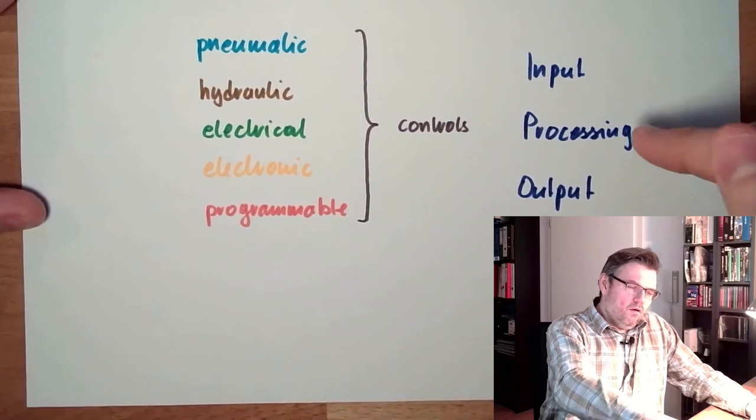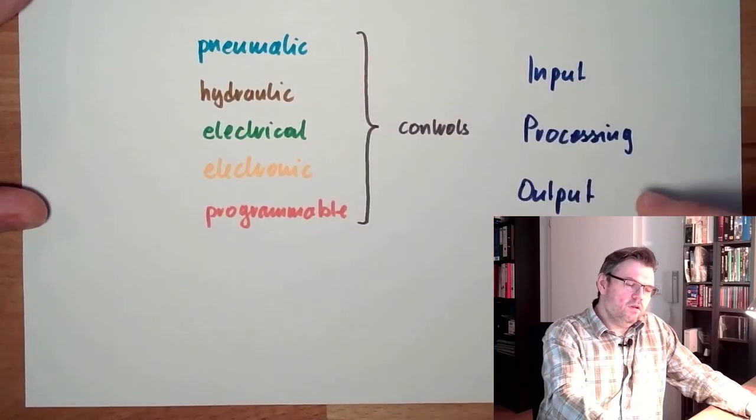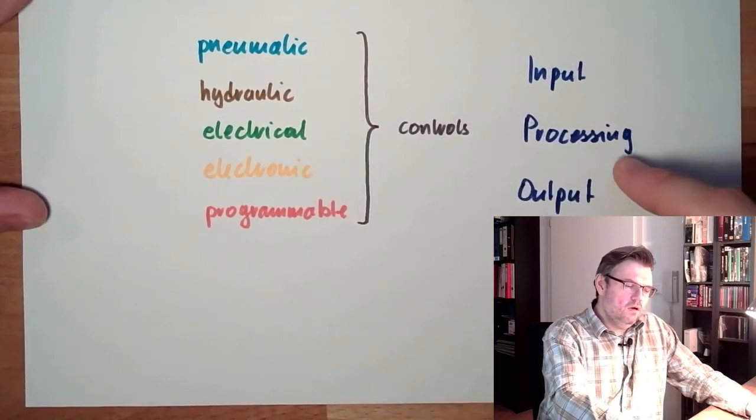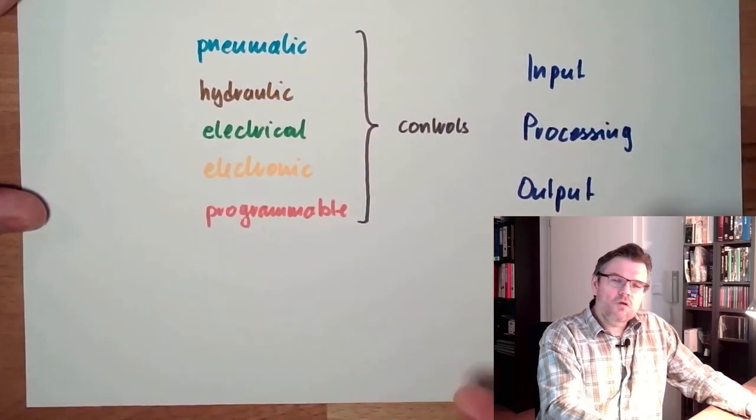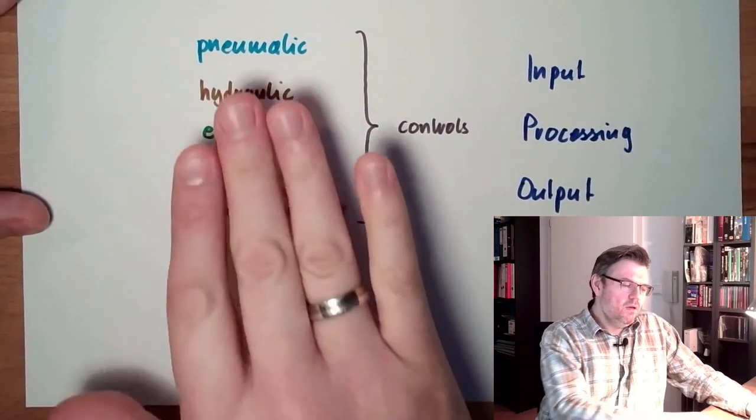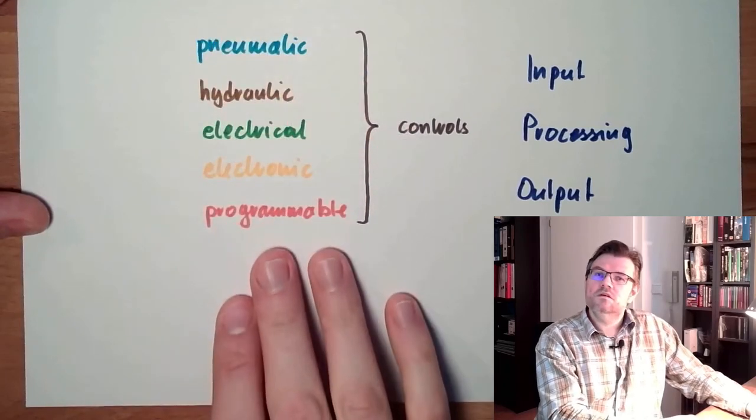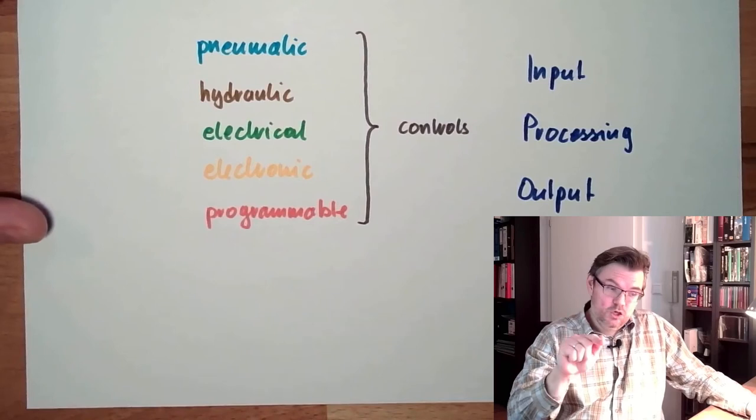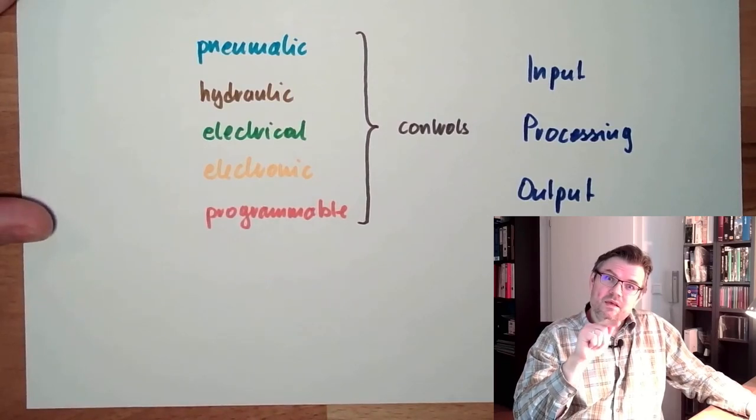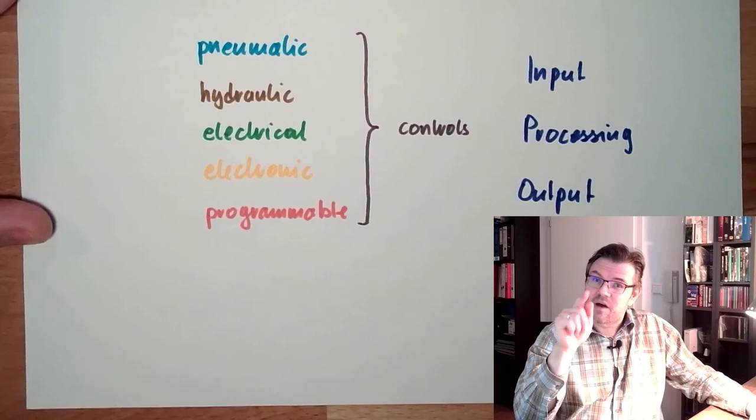There are input elements electrical, there are processing elements electrical. All of those elements are available in pretty much all of these control types. So the realization is really independent of the function. This is the important part.